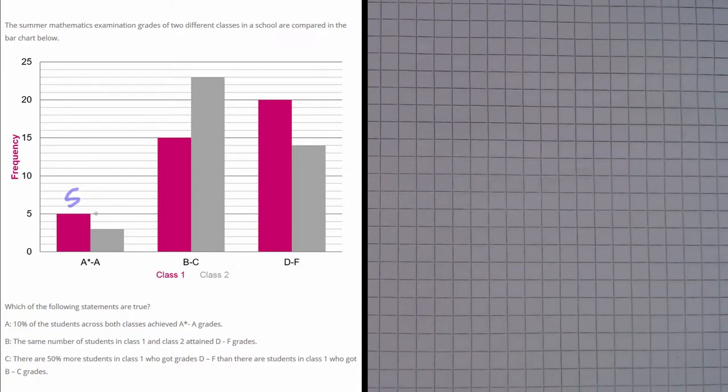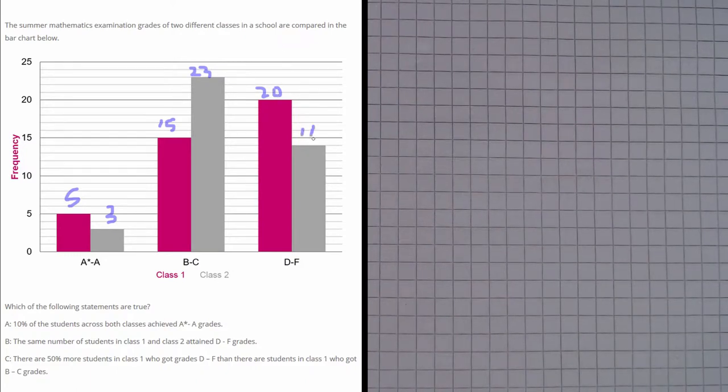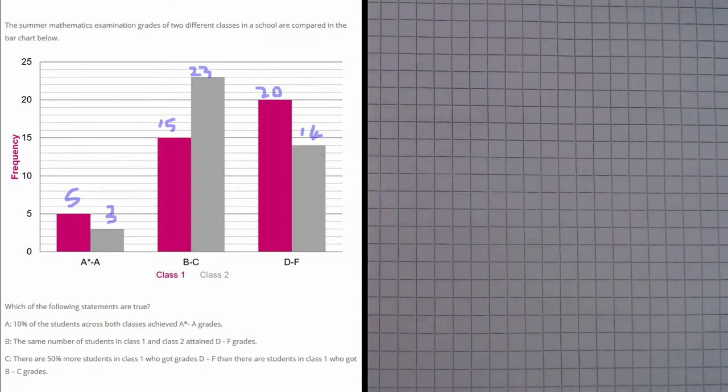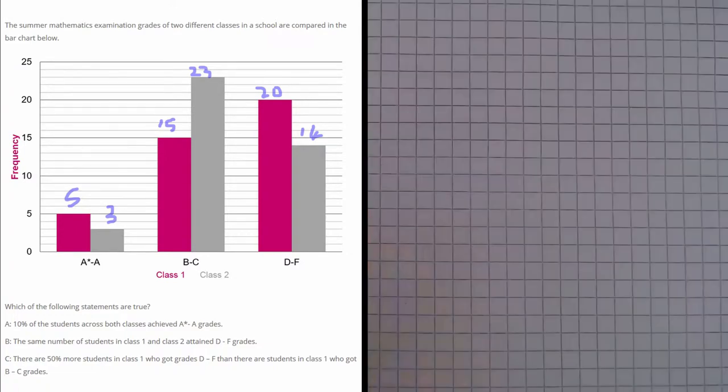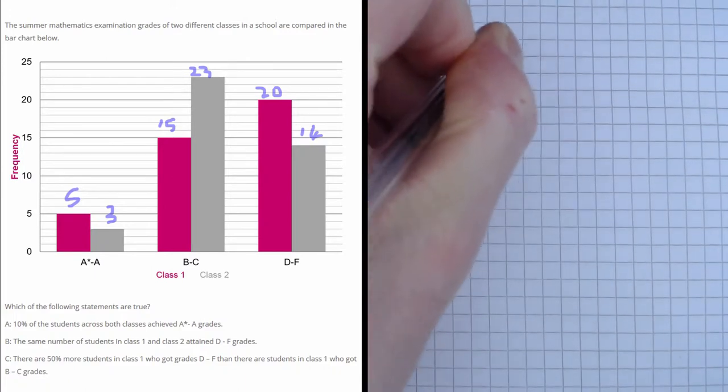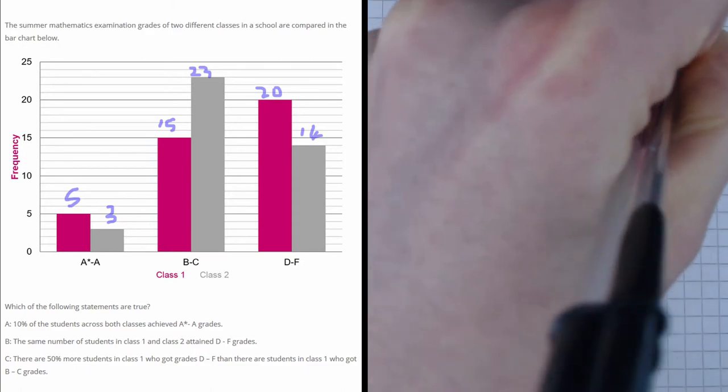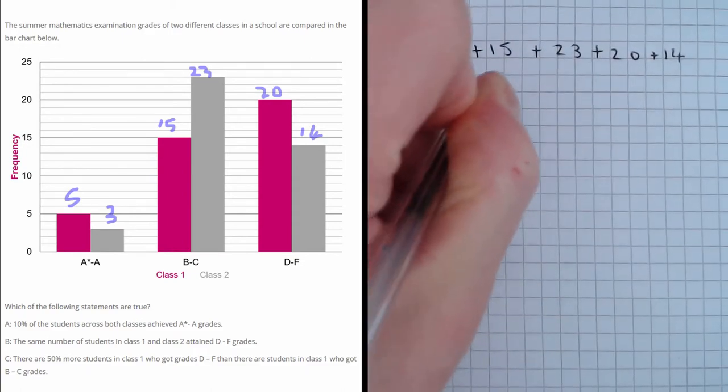So we can see here we've got 5, here we've got 3, 15 here, 23 there, 20 and 14. So they're the heights of each of the bars, so we're going to have to add these together. So we're going to get 5 plus 3 plus 15 plus 23 plus 20 plus 14 and that equals 80.